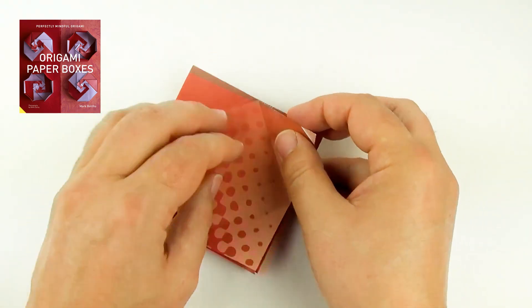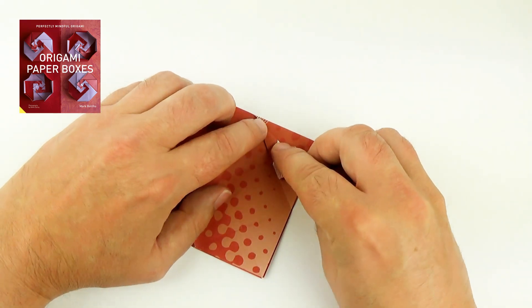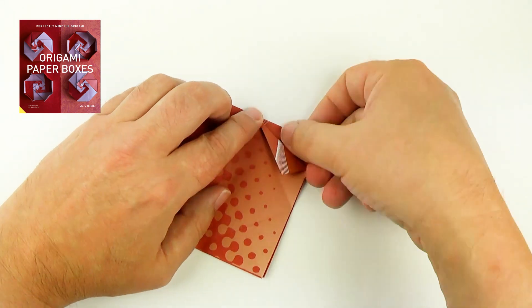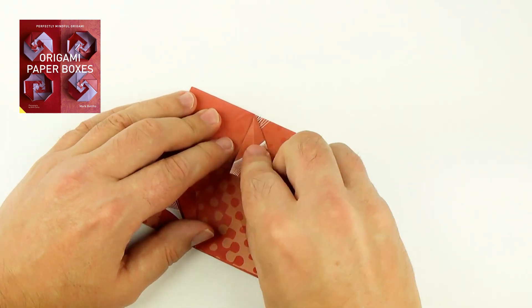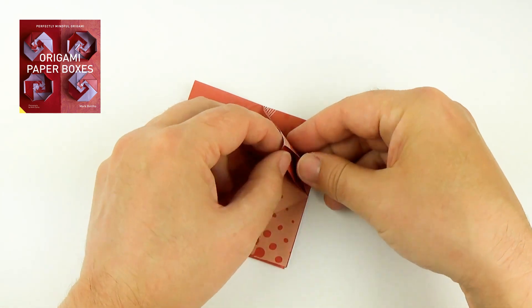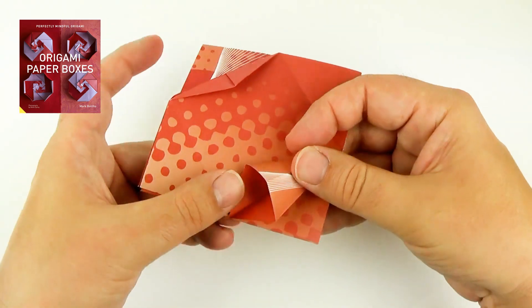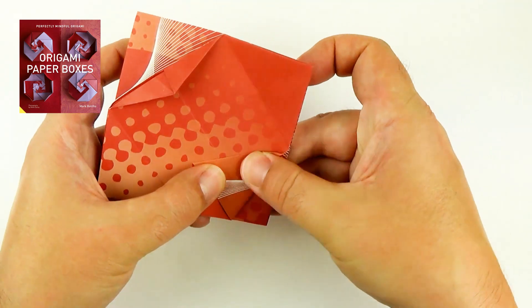Do the same on the other side. So fold it up. Fold the edge in to the crease. Open up. Fold over. Separate the layers.